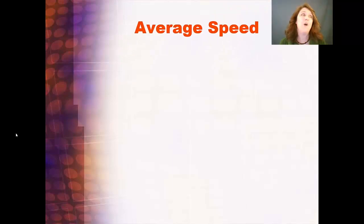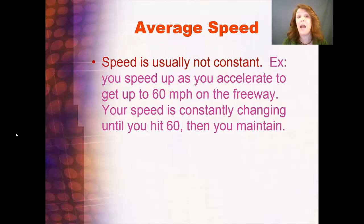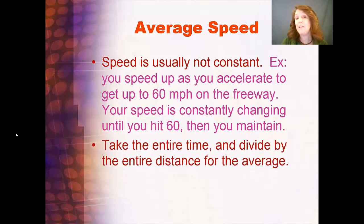Then average speed. When you start your car, you're not driving instantly 60 miles an hour. You do a lot of speeding up and slowing down. So usually what we calculate is average speed, because speed is usually not constant. As you accelerate to get up to 60 miles per hour on the freeway, you're speeding up. Your speed is constantly changing until you hit 60, and then you can maintain around 60. So we're looking for the average speed. You're going to take the entire time that you were driving and divide it by the entire distance, and that's going to give you the average speed.